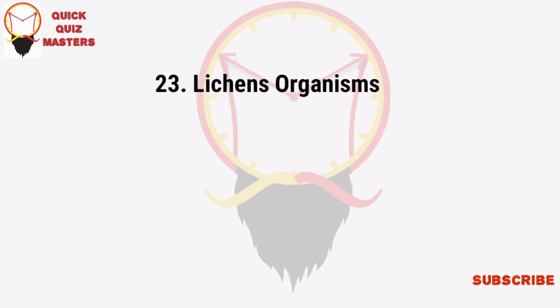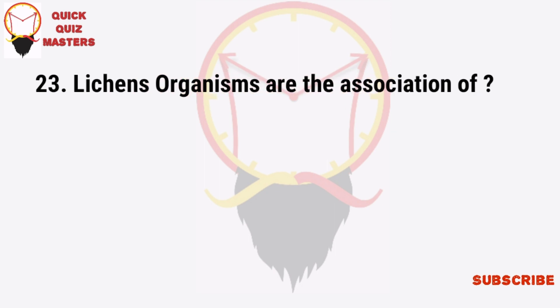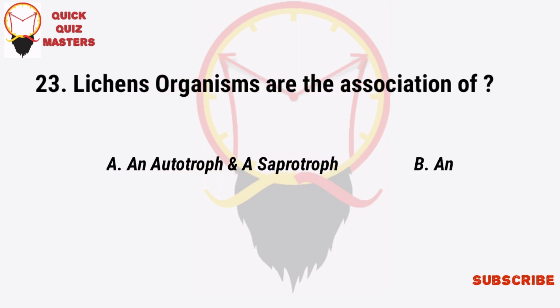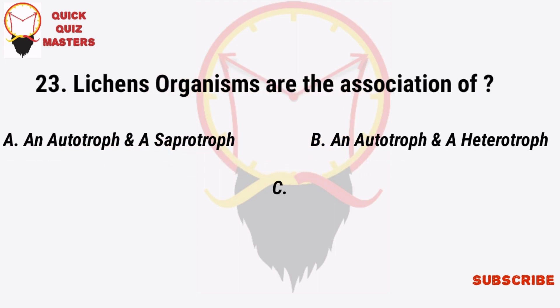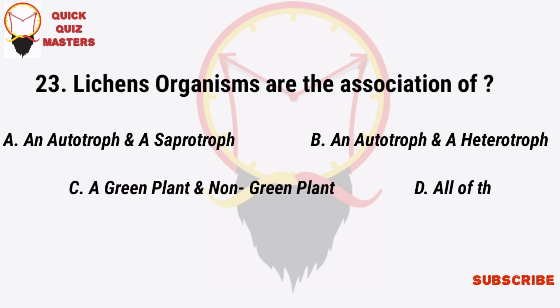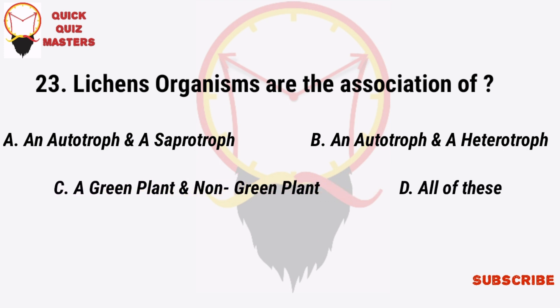Lichens are organisms that are the association of: an autotroph and a saprotroph, an autotroph and a heterotroph, a green plant and a non-green plant, all of these.